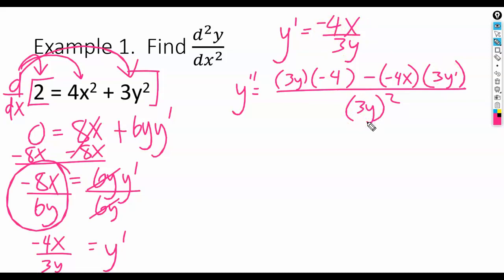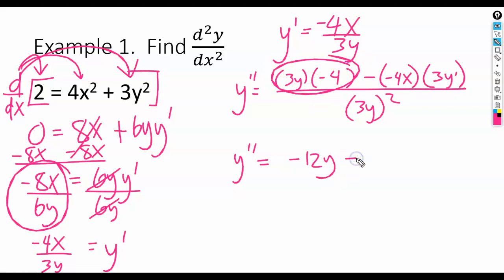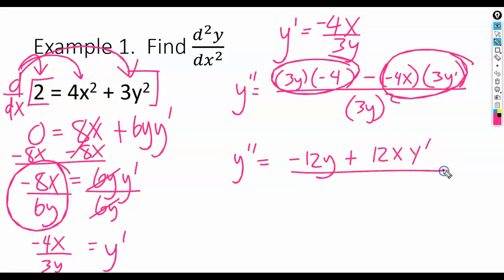Let's go ahead and simplify this a little bit. We can put these together to get negative 12y. We can put these together to get negative 12xy'. That's actually going to become a plus because we're subtracting a negative. And on the bottom, we have 9y squared.